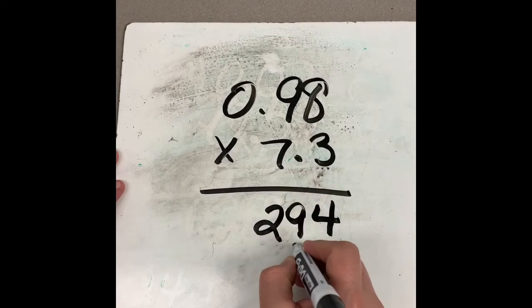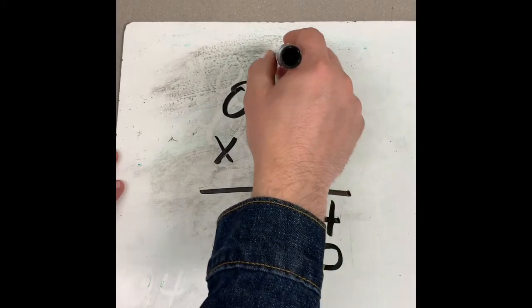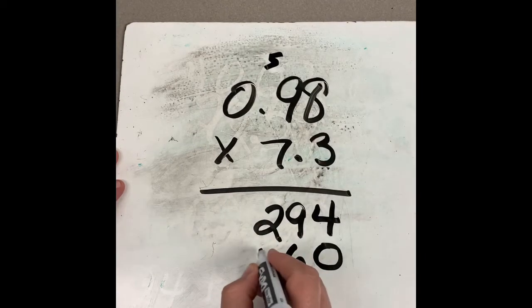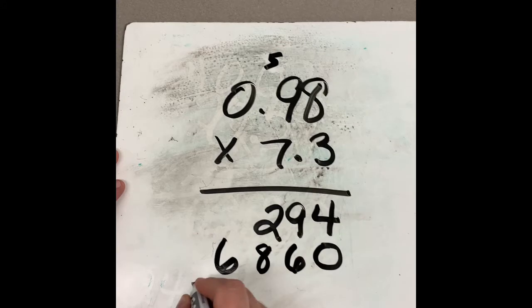Seven times eight is fifty-six. Six, and I'll carry my five over. Seven times nine is sixty-three, plus another five would give us sixty-eight. So there we go.